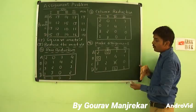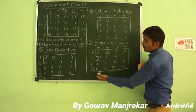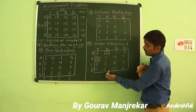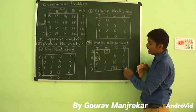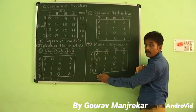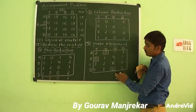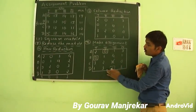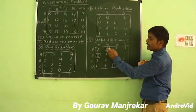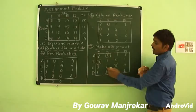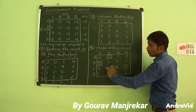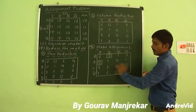Now we make column assignment by checking columns from left to right. If a column has a single 0, we assign it and cross the respective row 0s. The 1st, 2nd and 3rd columns already have assignments, so no new assignment is needed there. In the 4th column there is a single 0, so we make the assignment; the respective element is already crossed.